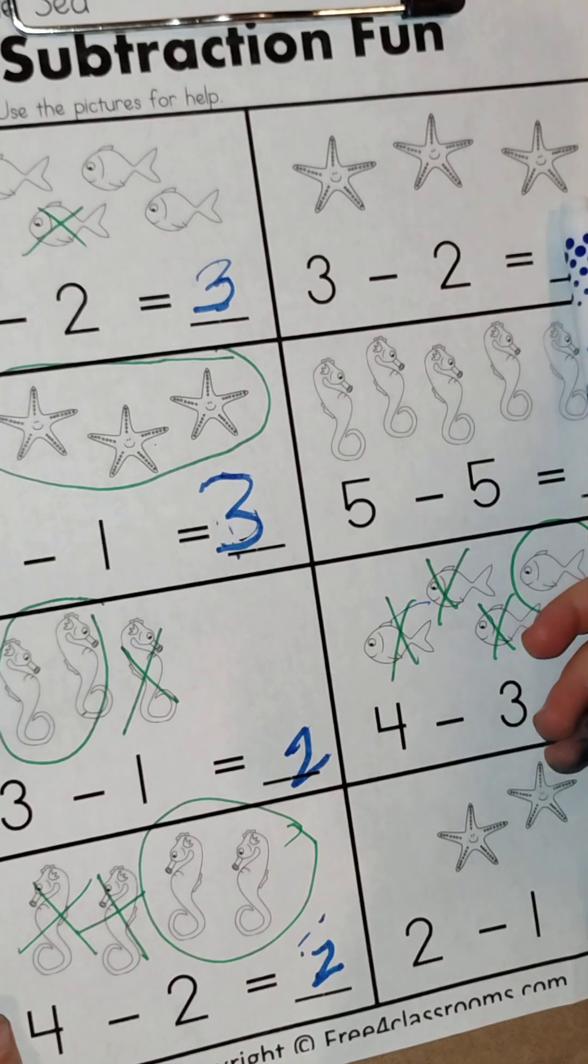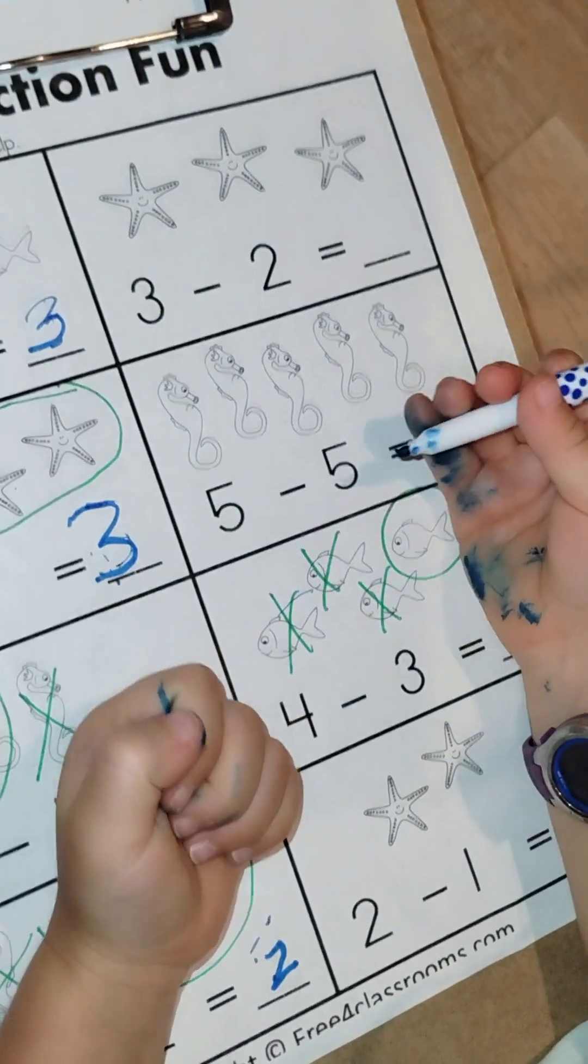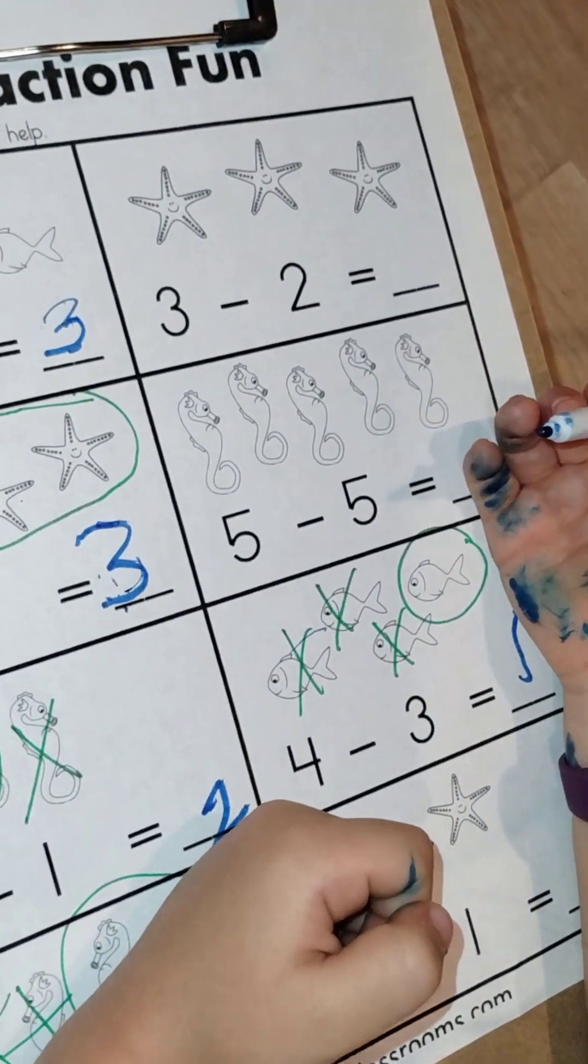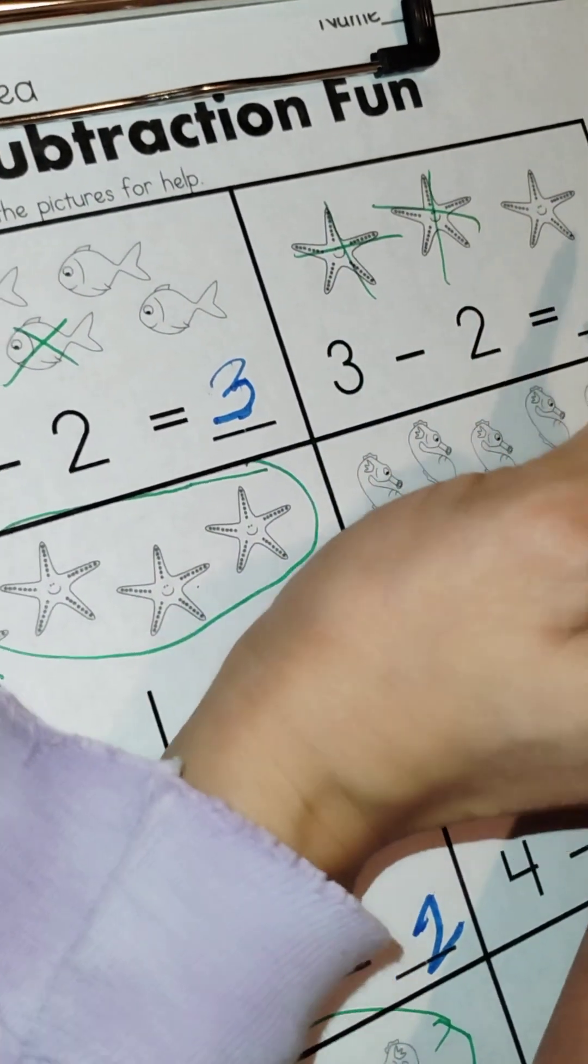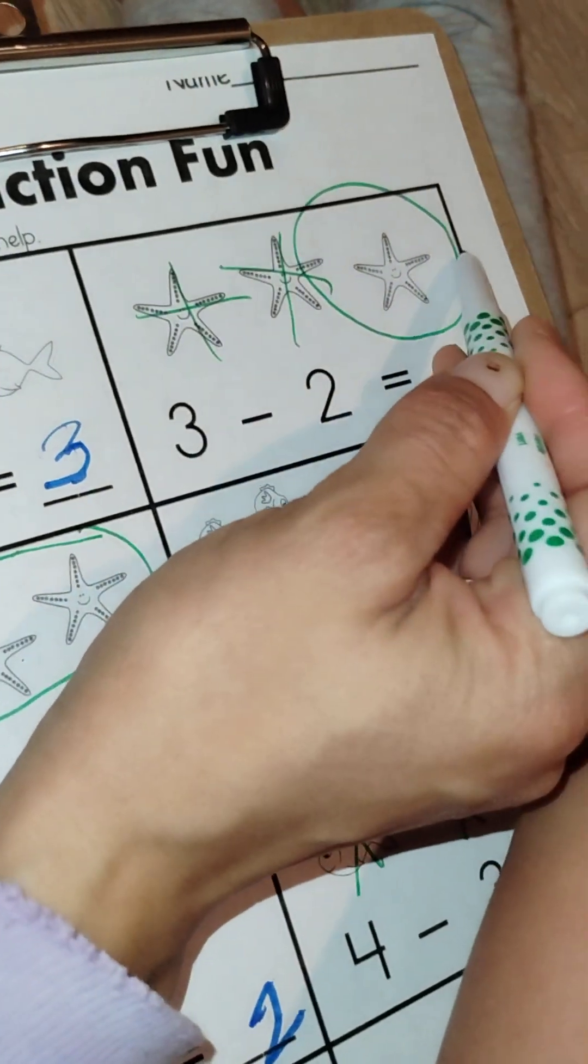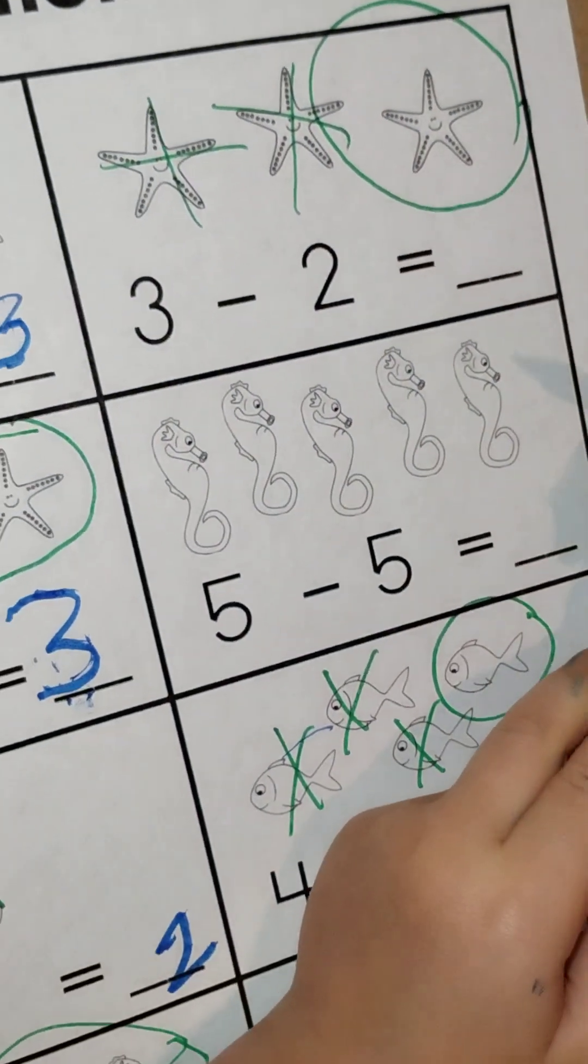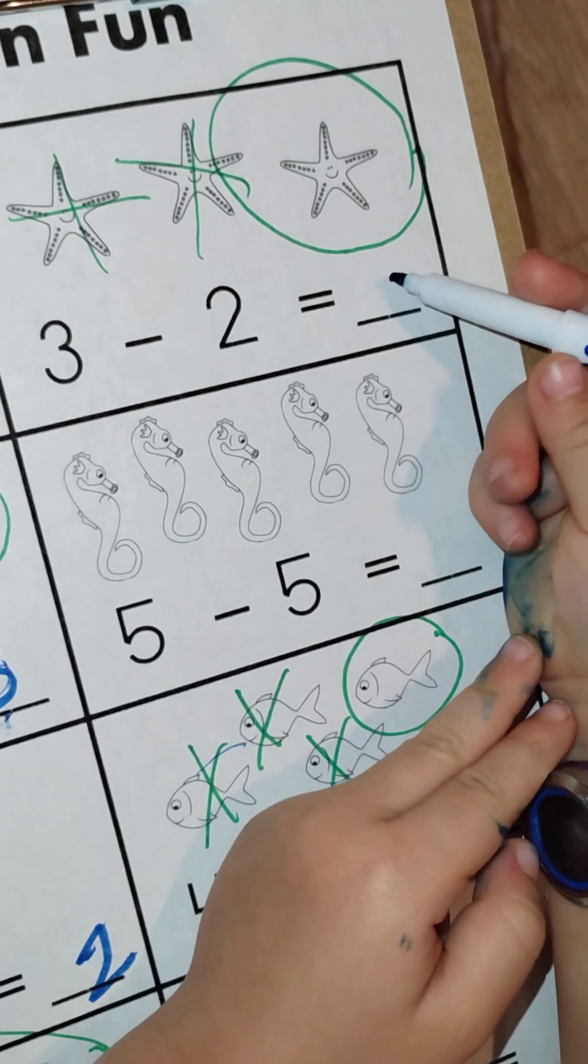Three minus two equals what number? Three minus two equals what number? Well, let's try it. There's one, two that you mark out, and how many is left? That is one starfish. One.